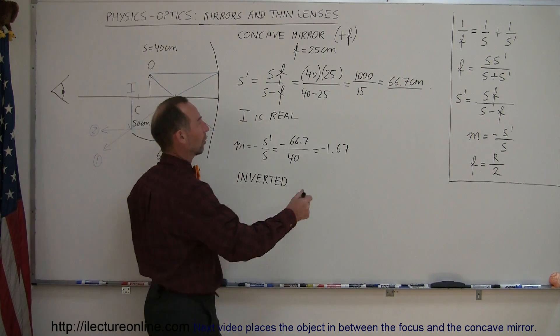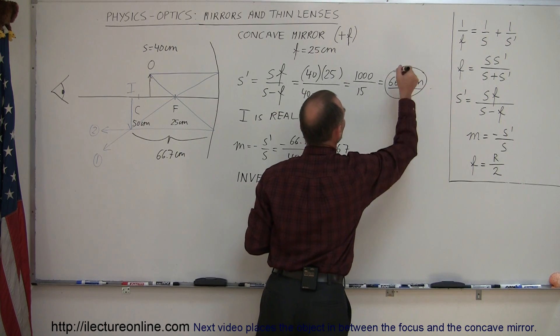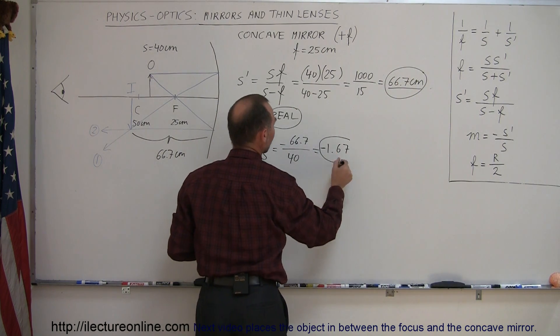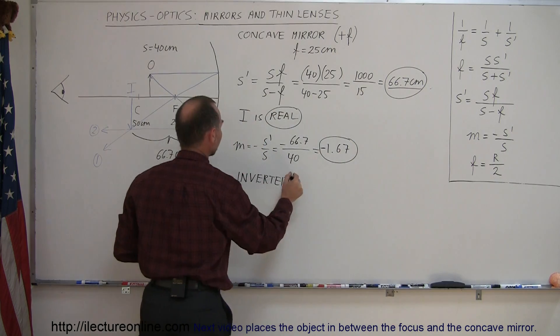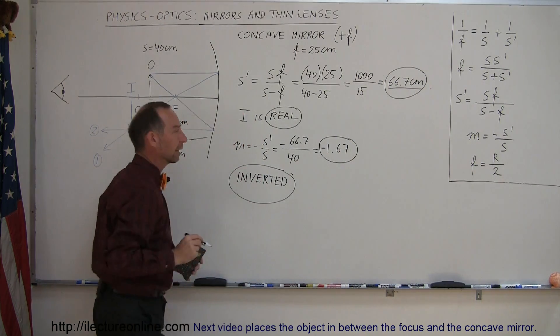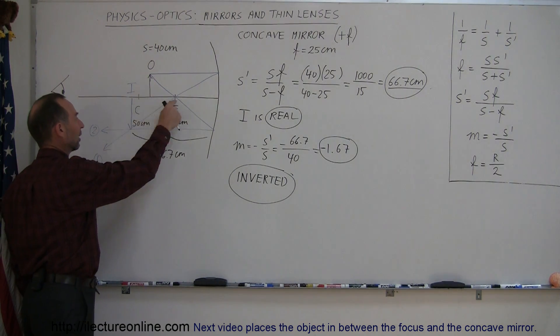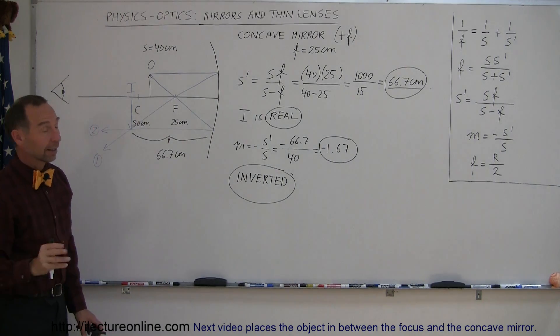So first of all, we found the distance to the image, we found that the image was real, we found the magnification of the image, and we realized that with the negative that it was inverted. And that's how you do that. That's how you find the image of an object placed in front of a concave mirror when the object is between the center of curvature and the focal point.